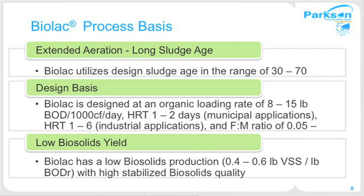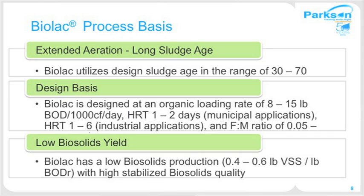The BioLac process has a low biosolids yield, which is a major advantage. It produces a yield of 0.4 to 0.6 pounds of solids per pound of BOD removed, making it an advantage over other processes.